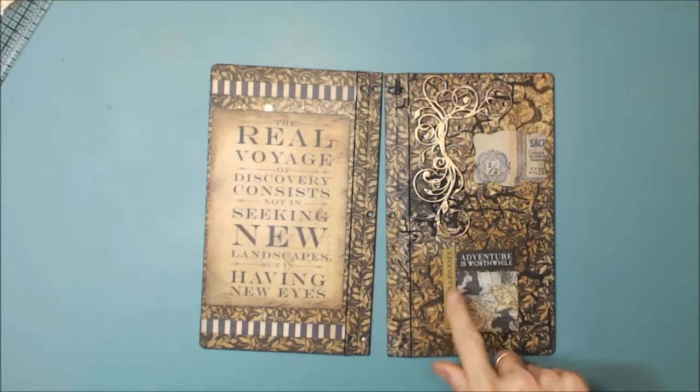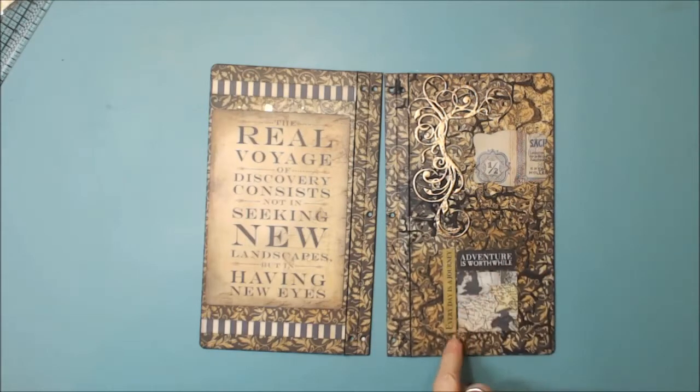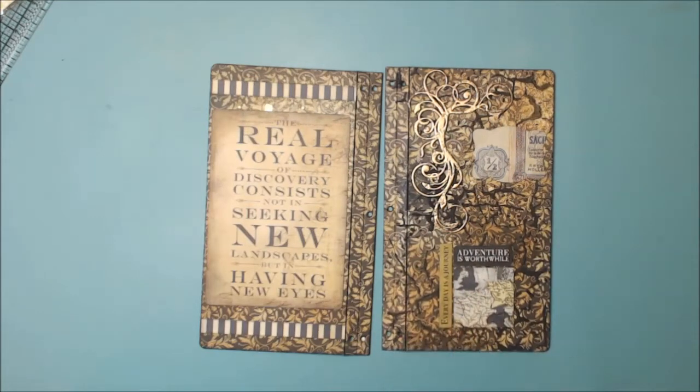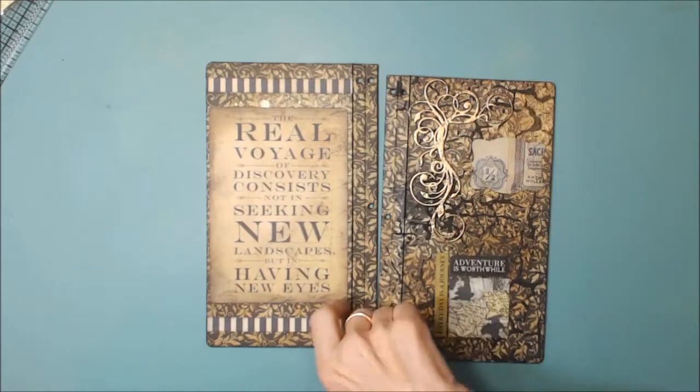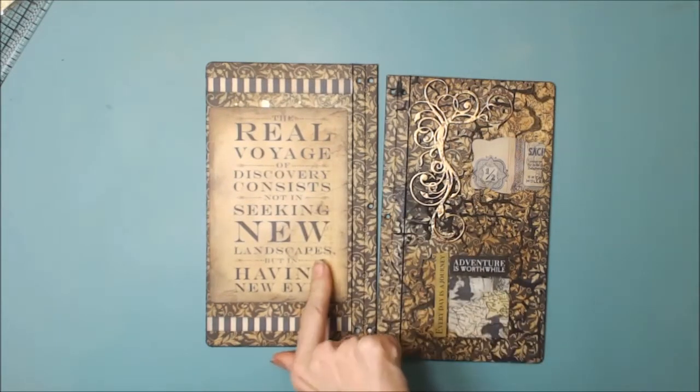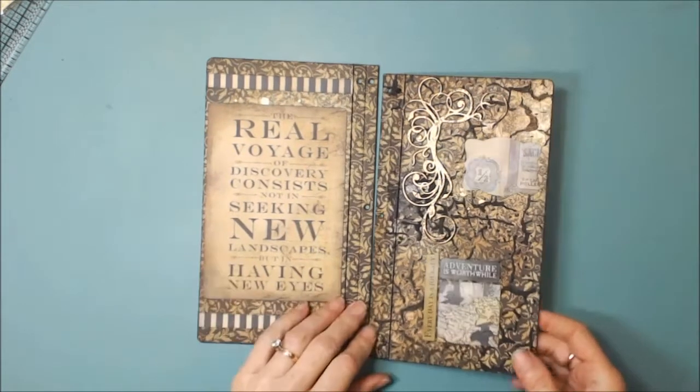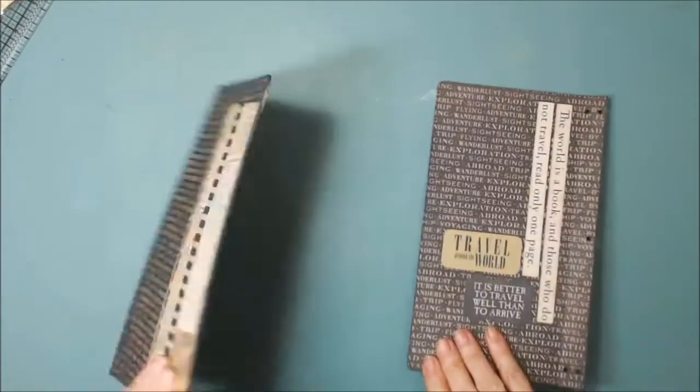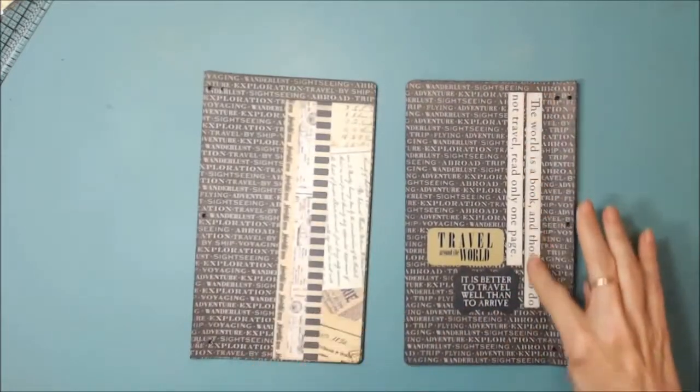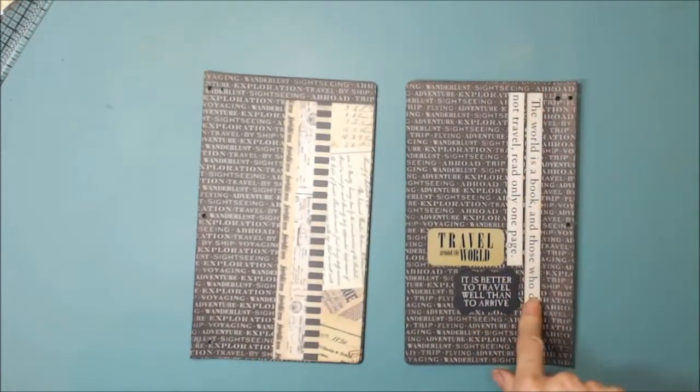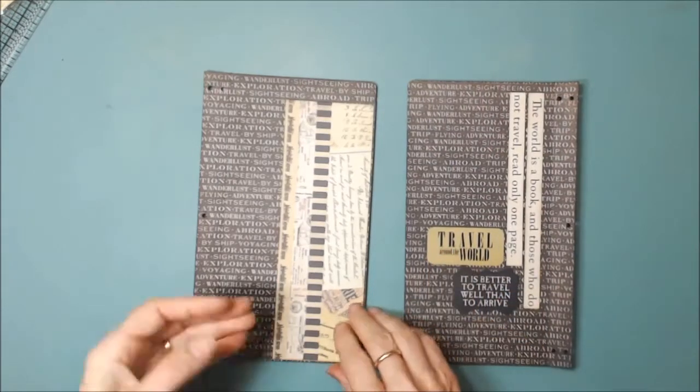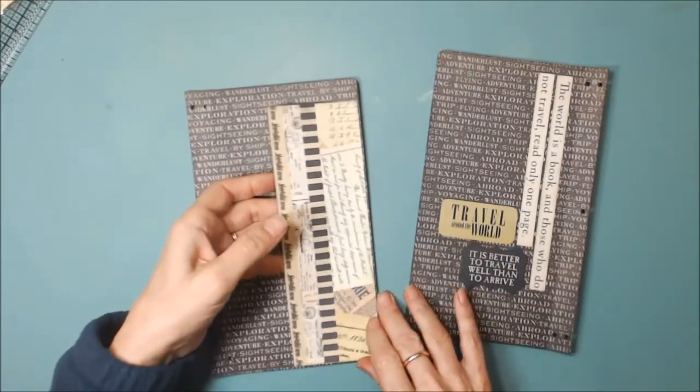This is a Creative Embellishments chipboard piece that I've heat embossed with Stampendous Aged Gold. And then these are some stickers from the Cartabella collection that I'm using Transatlantic. And this is some of the design paper from the collection. That's the outsides. And on the inside I cut out a quote here and just a couple of stickers. And then this is a little pocket.